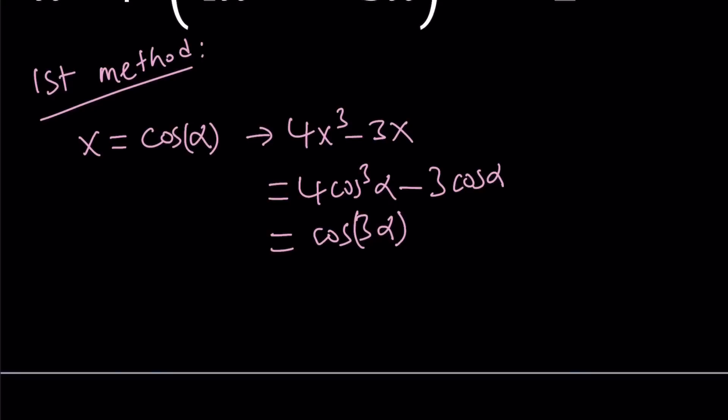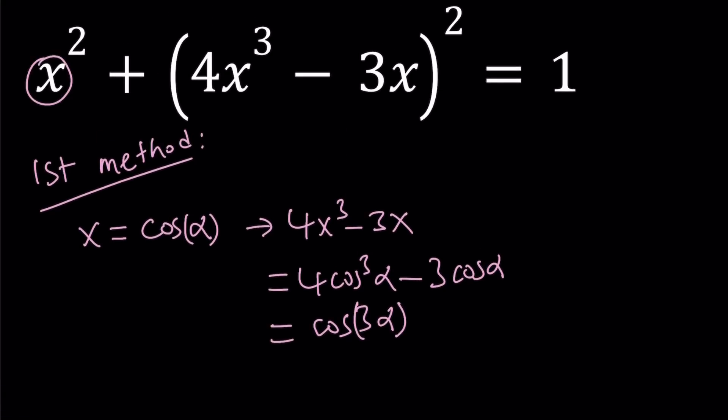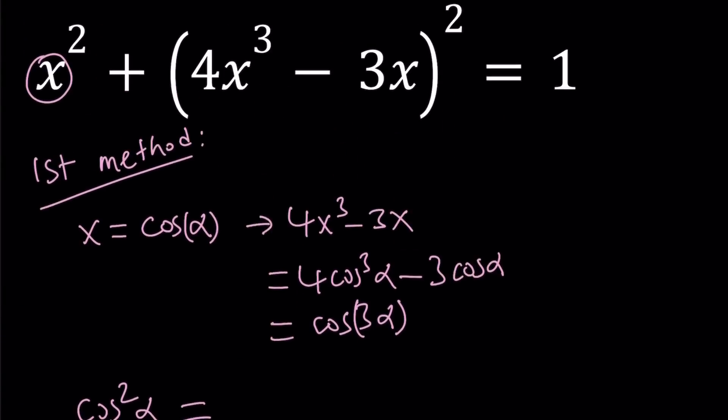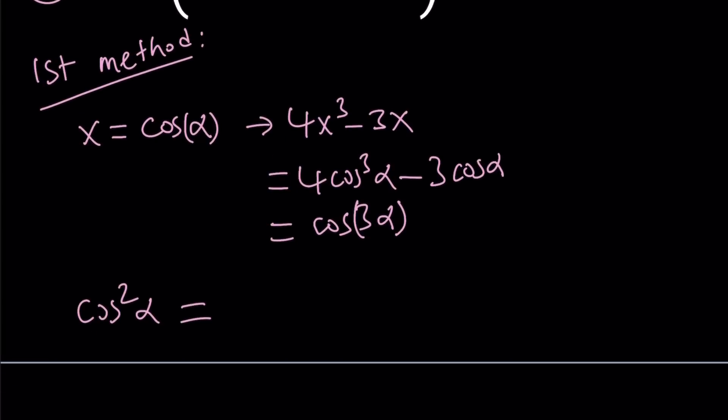So from here, we get the following equation. Replacing x with cosine alpha gives us cosine squared alpha on the left-hand side. And on the right-hand side, actually not on the right-hand side yet,